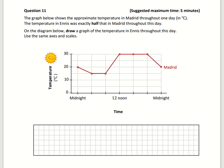Hi folks, this is Question 11. We need to find half of each value here in order to draw the graph for Ennis. Ennis is half the temperature of Madrid, so the first one is: in Madrid it's 20, so therefore in Ennis it has to be 10. That's half of 20.